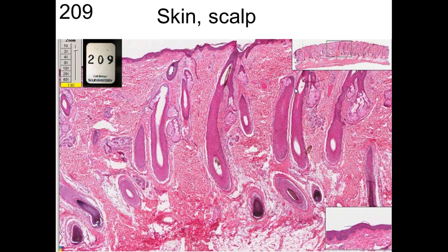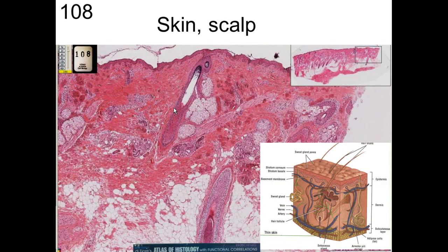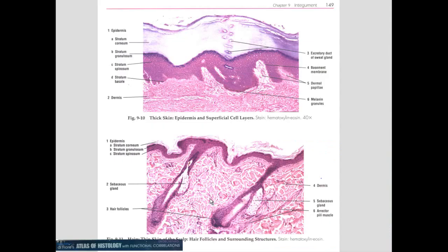Some follicles are curved rather than straight — if you have curly hair, you have curly hair follicles; straight hair has straight follicles. Here we see sebaceous glands, and in another view we see a nice arrector pili muscle, sebaceous gland, and hair follicles. The epidermis, dermis, papillary region, and reticular region are visible, with hair follicles going all the way down deep.